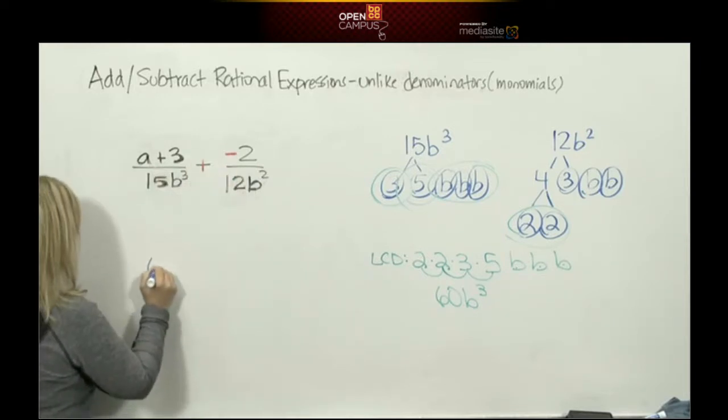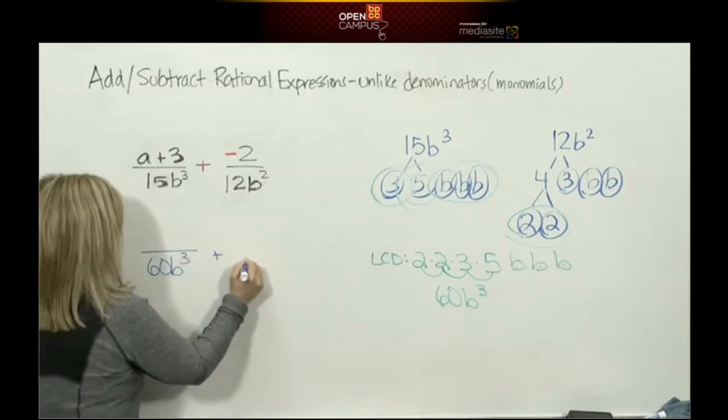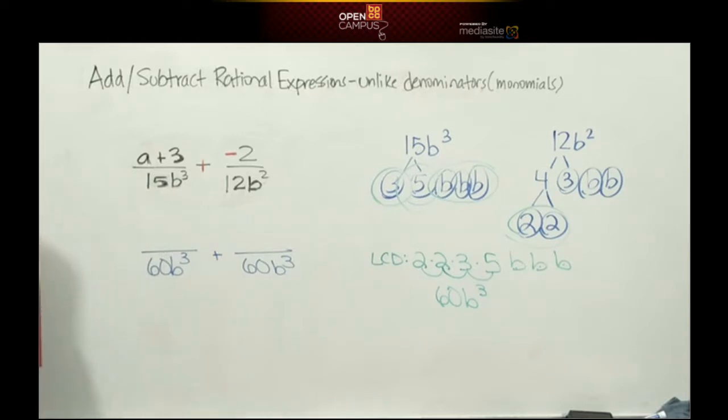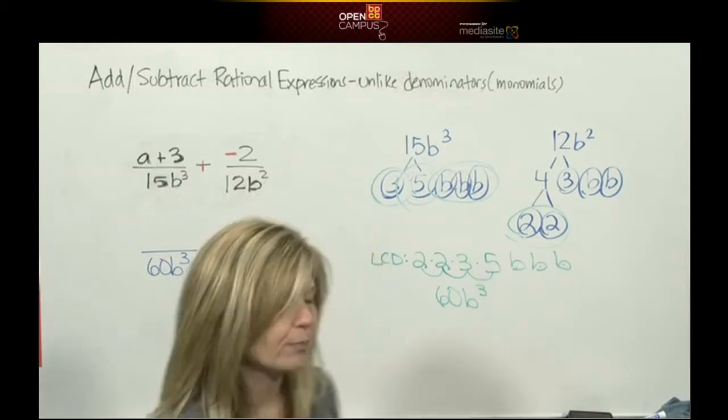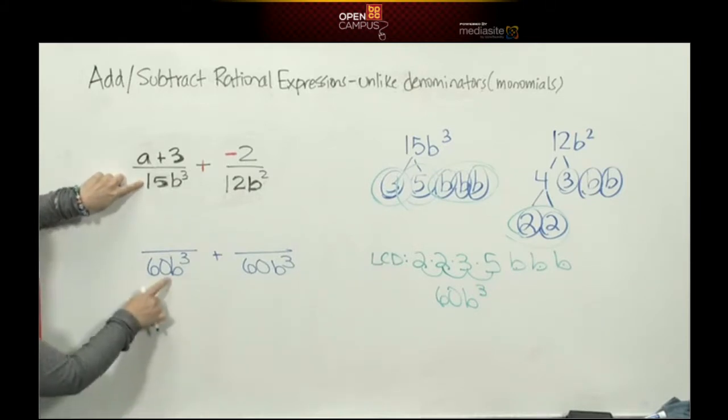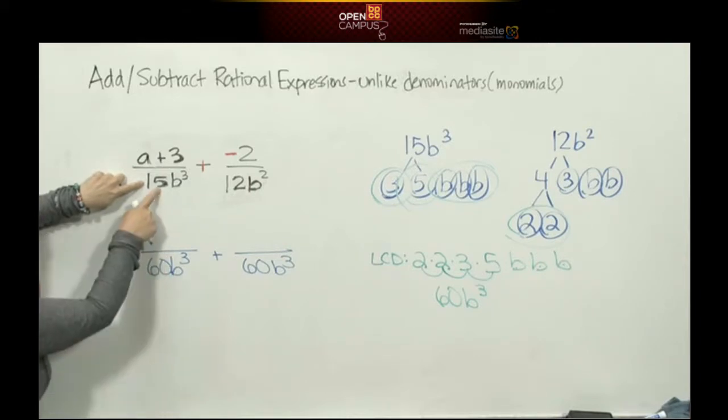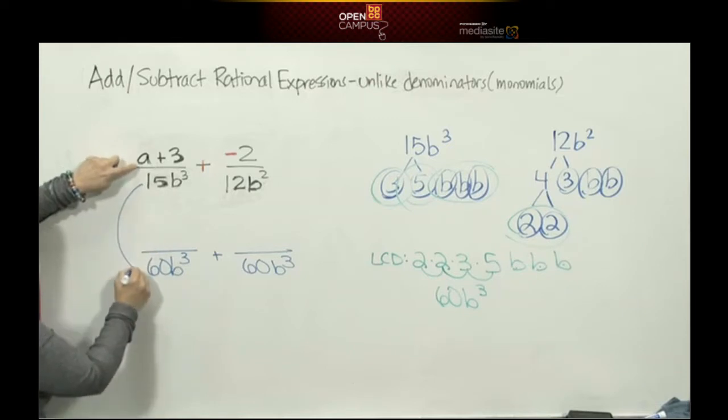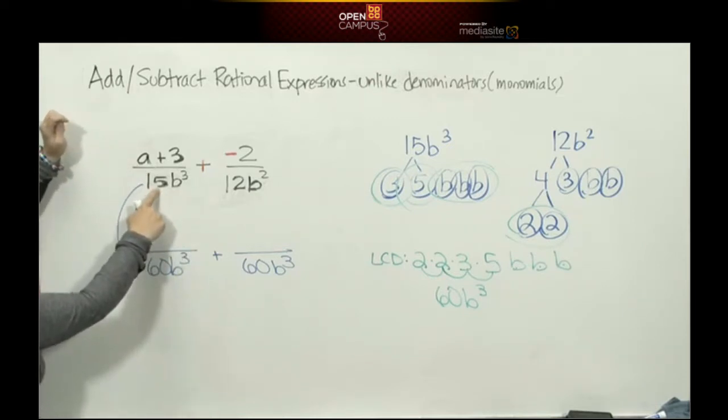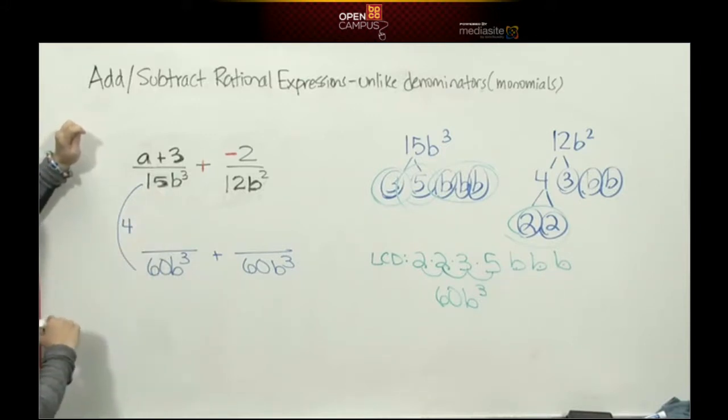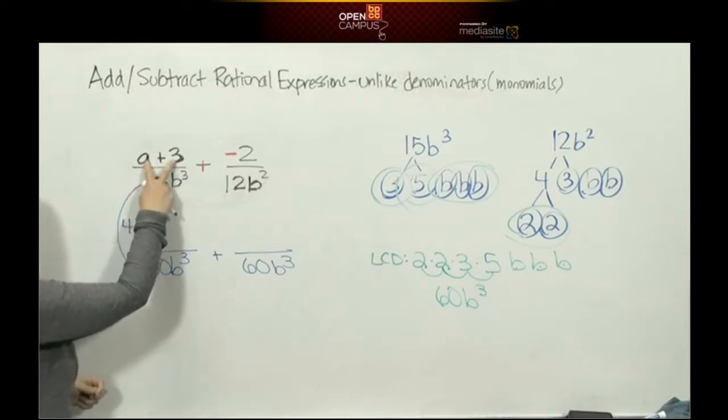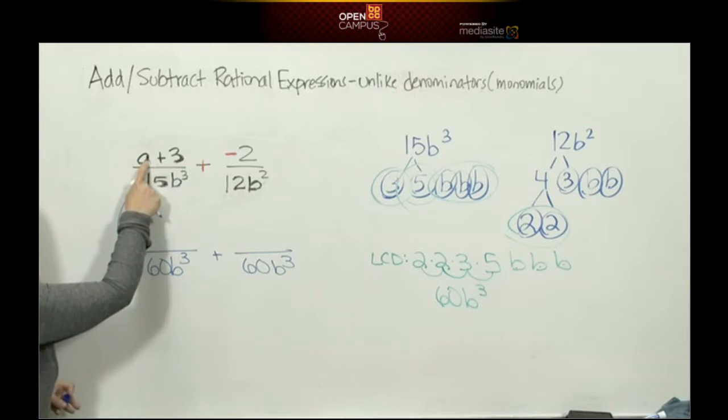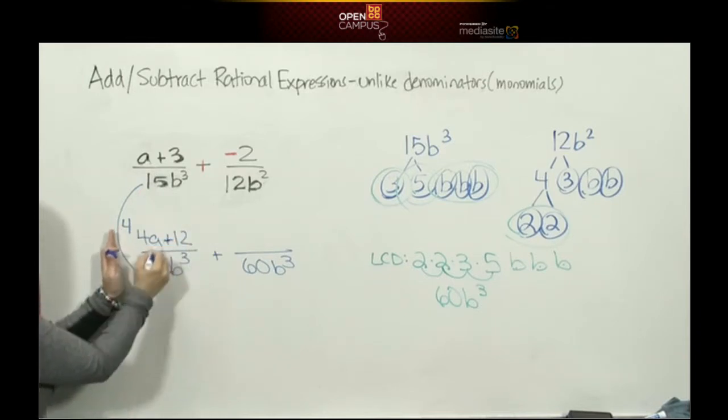So I'm going to rewrite my fractions. I know my denominators are going to be 60b cubed. The song says if you change the denominator, you must change the numerator. Here's the old denominator 15b cubed, and we're changing it to 60b cubed. The b cubed stayed the same, so what do I multiply to 15 to make 60? That would be 4. If I multiply the denominator by 4, I multiply the numerator by 4. But now we have a binomial times a monomial, we have to distribute. A times 4 is 4a, positive 3 times 4 is positive 12.